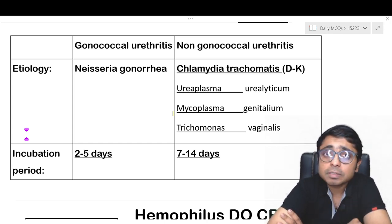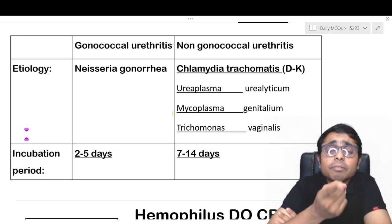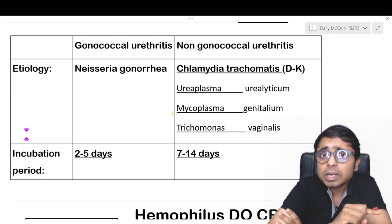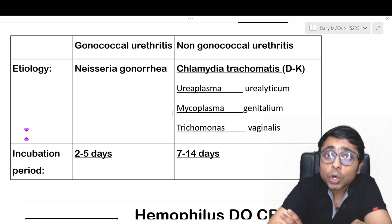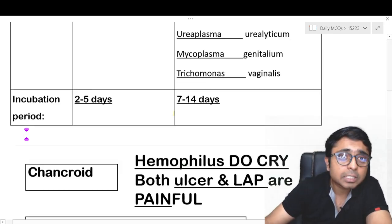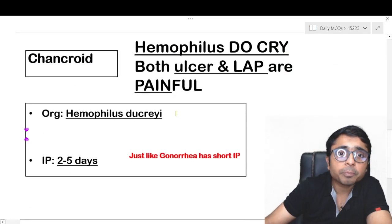Even Trichomonas vaginalis, which is a cause for vaginal discharge, is also going to cause non-gonococcal urethritis. Please remember this very important point.